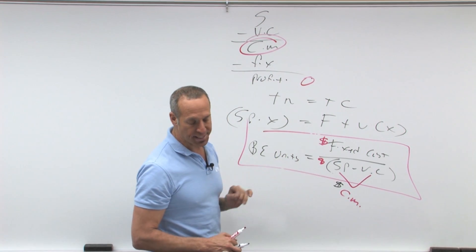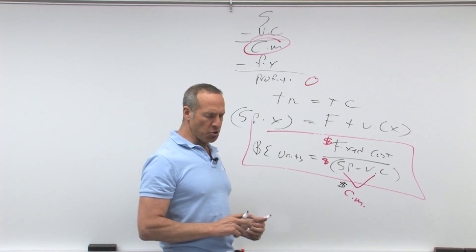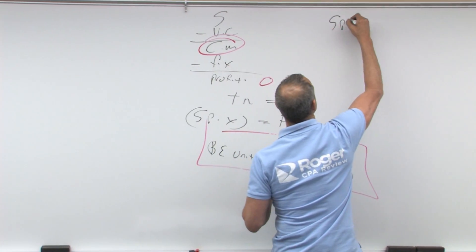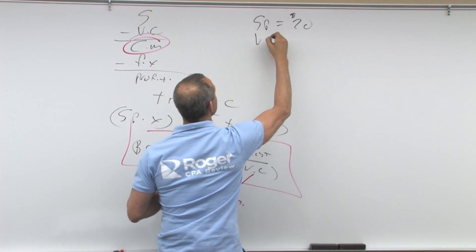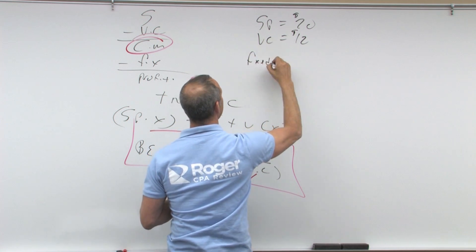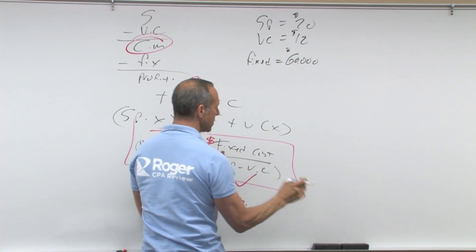So dollars over dollars is non-dollars. That is the formula we're going to use. Let's say, for example, I want to write a brand new CPA review book. And let's say the sales price is going to be $20. Variable costs are $12. Let's say my fixed costs are $60,000.